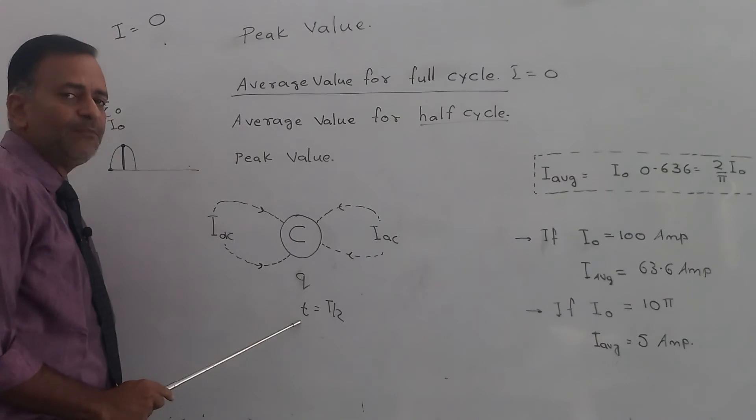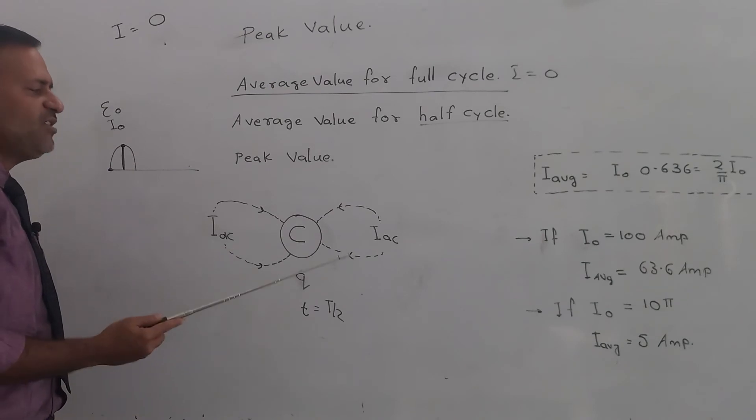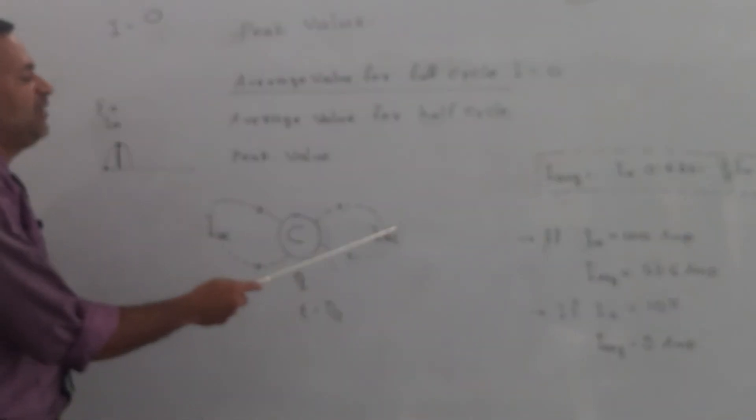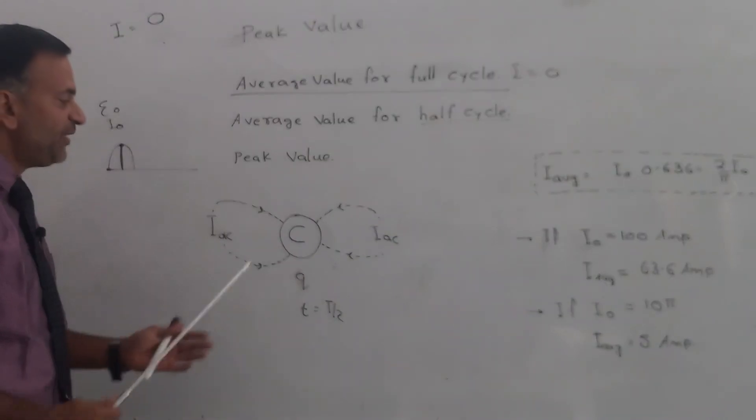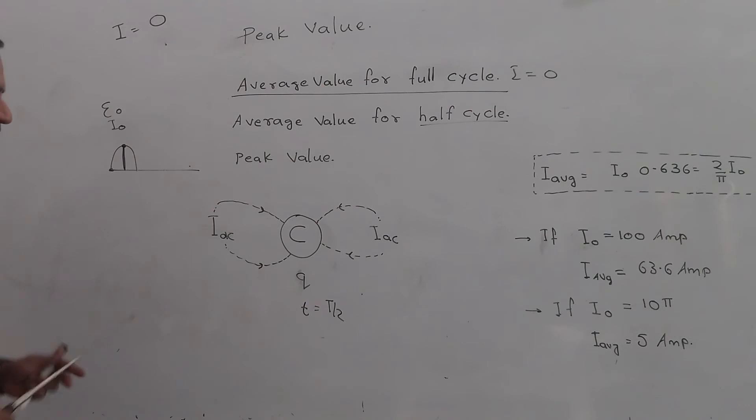If this is so, then this DC current is the average value for half cycle for AC current. That value of DC current which transfers in a circuit the same amount of charge in the same time as transferred by AC—that value of DC is known as the average value of AC.